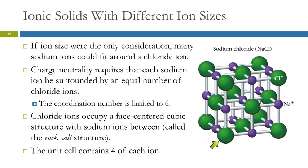This is a face-centered cubic structure. Looking at the green spheres, there are spheres at each corner and one at each face — that's face-centered cubic — and the sodium ions fit in between. This is called the rock salt structure. It's based on face-centered cubic, and we look at the larger ion, the chloride. Each unit cell contains four cations and four anions.